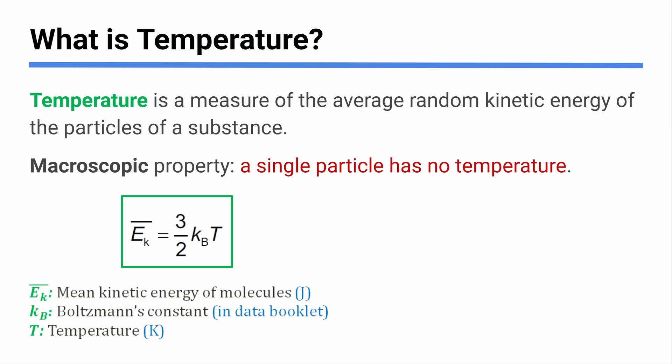So here's an equation from your data booklet about their relationship. This shows the relationship between that average kinetic energy and temperature. The E with the bar over it here, that bar is our symbol, math symbol for a mean. Like you might see X with a bar on top in math class. That means the average of your X values. So it's the mean kinetic energy of the molecules of a thing, equals three halves times this Boltzmann constant from the front of your data booklet. Be careful because there's lots of Ks. This is K sub B.